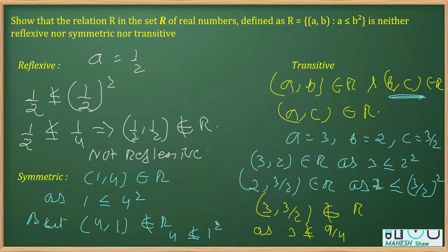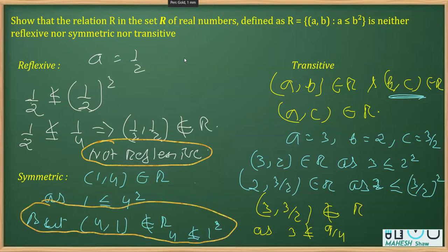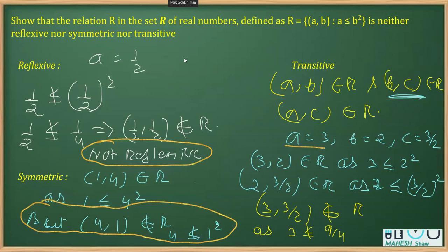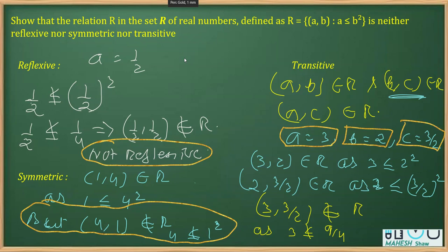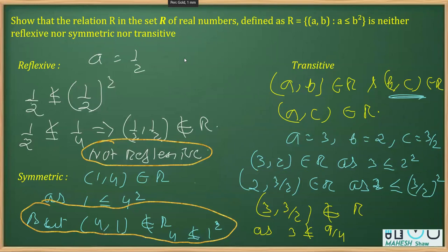To review: proving it not reflexive and not symmetric is relatively easy. Proving it not transitive can be difficult, but if you remember the triplet — start with A, reduce by one to get B, and take C as half of A — you'll find it straightforward. With A = 3, B = 2, C = 3/2, you can show (a,b) ∈ R and (b,c) ∈ R, but (a,c) ∉ R. This is how the question can be solved.